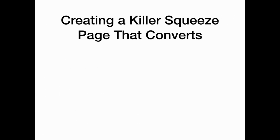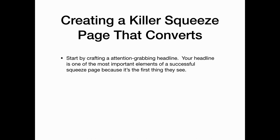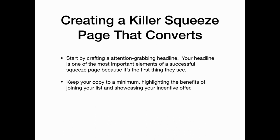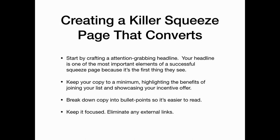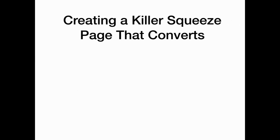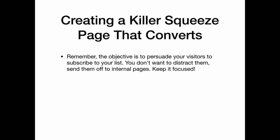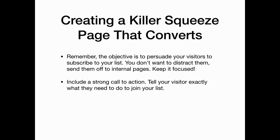Here's how to create a killer squeeze page that converts: start by crafting an attention-grabbing headline — it's the first thing your visitors see and one of the most important elements of a successful landing page. Keep your copy to a minimum, highlight the benefits of joining your list, and showcase your incentive offer. Break down copy into bullet points so it's easier to read. Keep it focused and eliminate any external links — the objective is to persuade your visitors to subscribe, so don't distract them. Include a strong call to action telling your visitor exactly what they need to do to join your list.